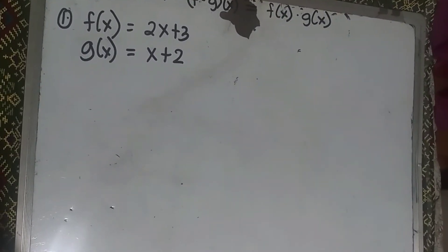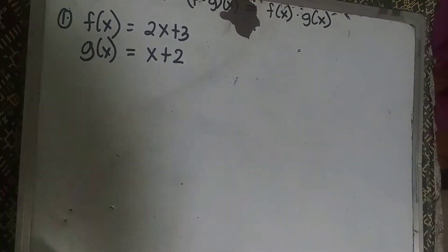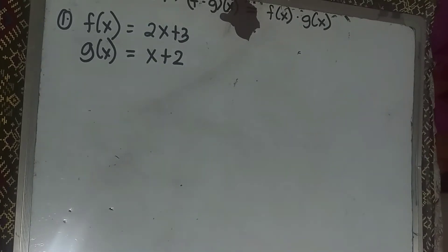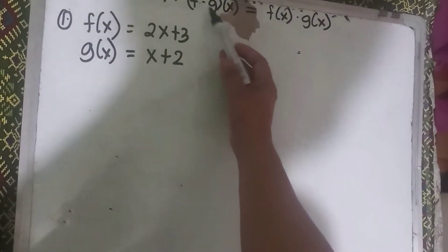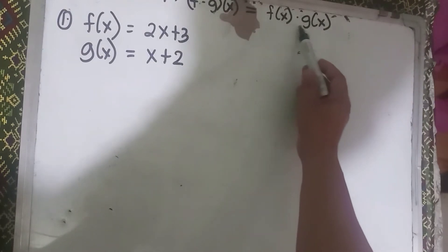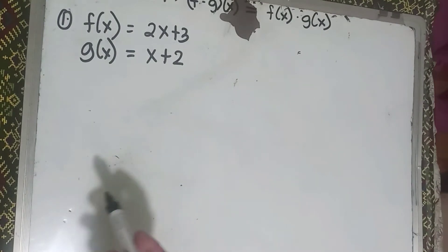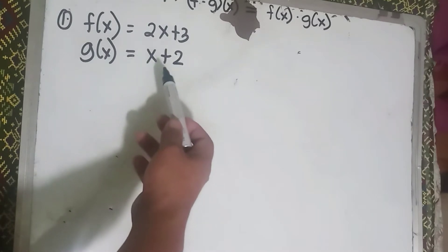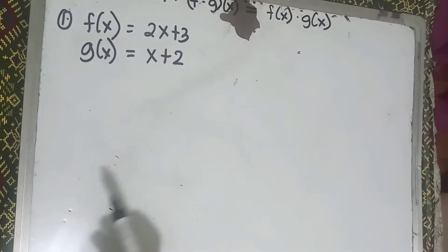Hello everyone, welcome to this mathematics tutorial. Today we will discuss how to find the product of functions. In order to find the product of a function, you need to memorize or familiarize the formula. For example, if we have f of x equals 2x plus 3 and g of x equals x plus 2, how do we find the product of this given function?